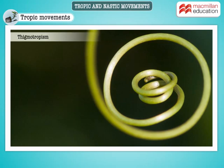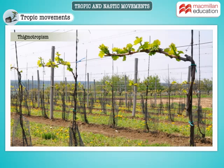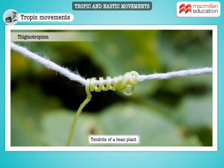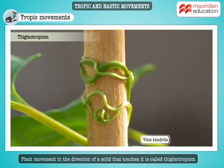These wiry stems are actually tendrils. Tendrils move in the direction of a solid object that they happen to come in contact with. Plant growth movement in the direction of a solid that touches it is called thigmotropism.